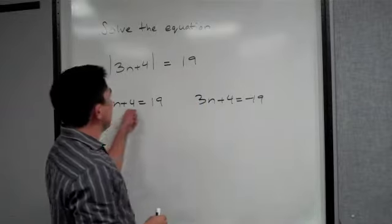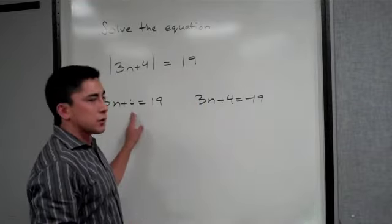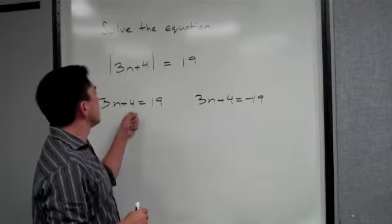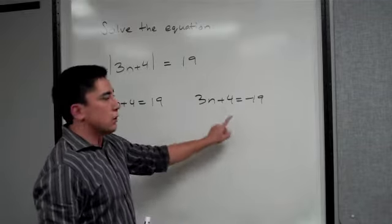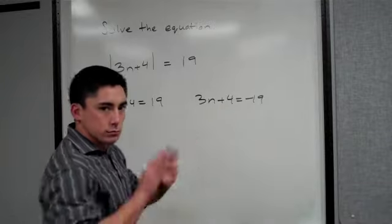When you do this, do not change the plus 4. Don't make that minus 4. No, no, no. Don't change that. You change the number on the outside. 19, negative 19. Don't change that symbol.